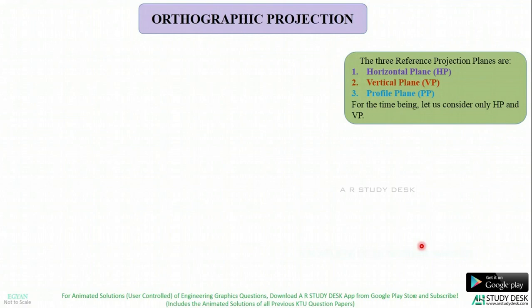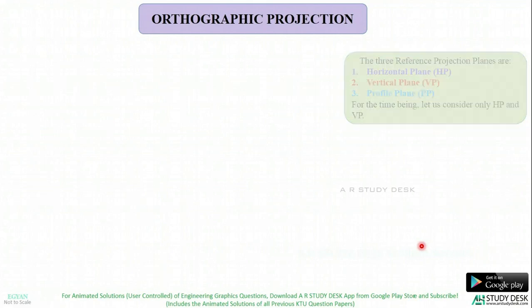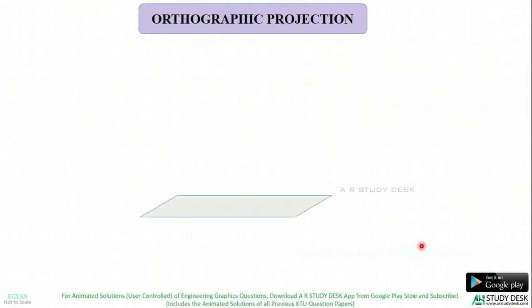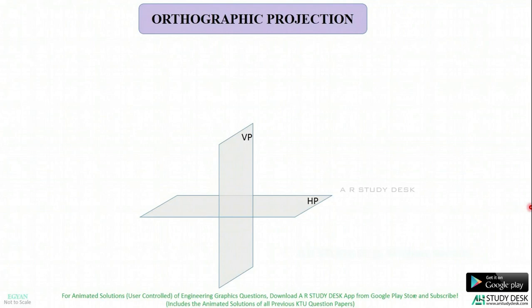The three planes are: the horizontal plane, vertical plane, and profile plane. For the time being, we will be taking only the first 2 planes, that is the horizontal plane and vertical plane. The horizontal plane, which is also called HP, will be horizontal. Now VP, or vertical plane, will be perpendicular to HP.